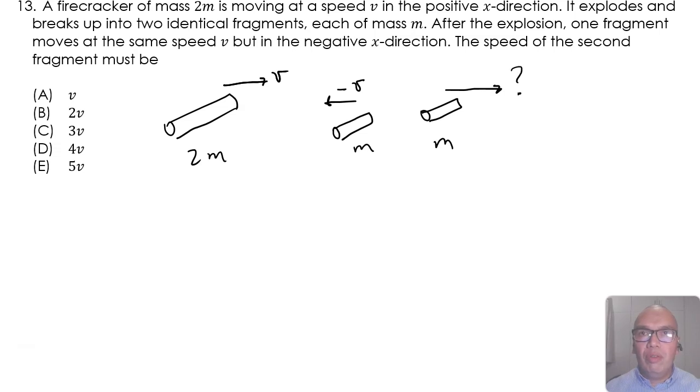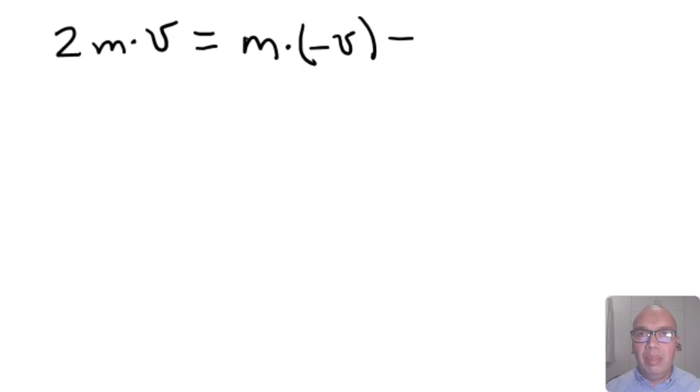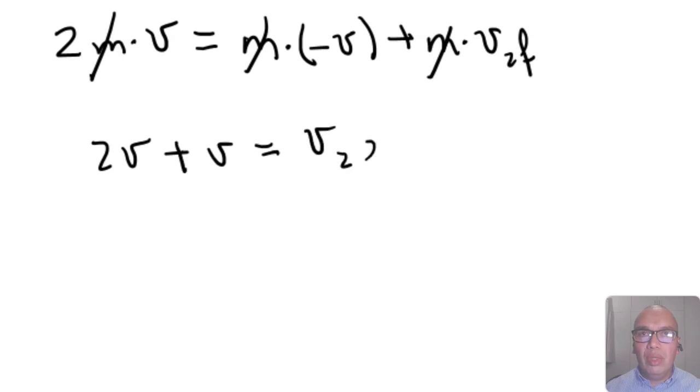From conservation of momentum, we have 2m times v is equal to m times negative v plus m times v2f. We can cancel the mass out of the equation and are left with 2v plus v is equal to v2f.